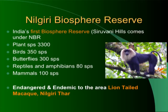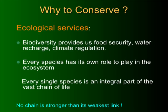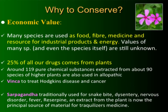Biodiversity provides food security, water, climate regulation, and every species has its own role to play in the ecosystem. Every single species is an integral part of the vast chain of life. Many species are used as food, fiber, medicine, and other resources. Twenty-five percent of all our drugs come from plants.